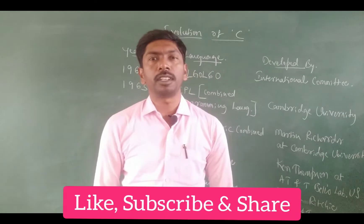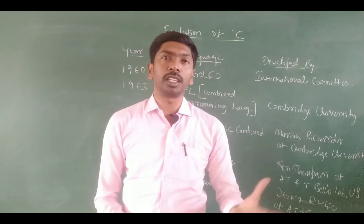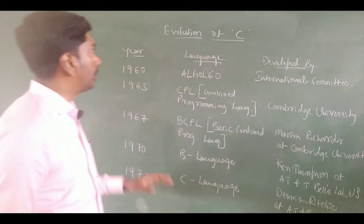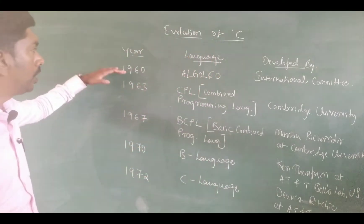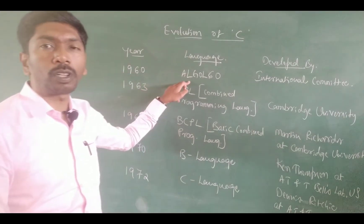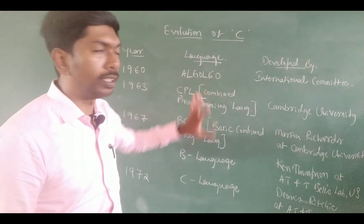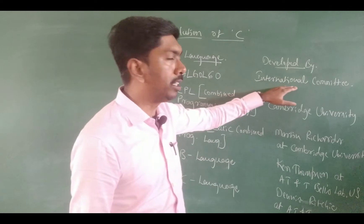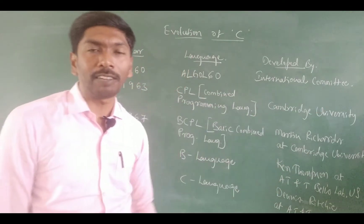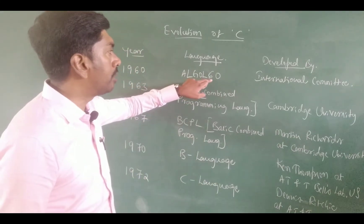Next, the evolution of C. In the year 1960, the first Algol 60 was a programming language. Algol 60 was developed by an International Committee — the algorithm concept of programming language development, called Algol 60, algorithm language 60.